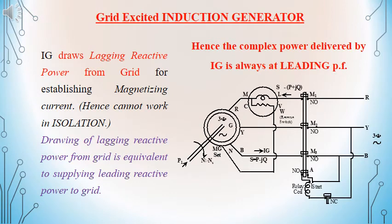The medium of energy conversion between the mechanical energy and electrical energy is a magnetizing system. In order to have the magnetizing current, there should be a lagging power that is drawn from the supply system or from the grid for an induction generator. Drawing a lagging reactive power from the grid is equivalent to supplying a leading reactive power to the grid. Because of the same, the grid excited or separately excited induction generator will always be operating at a leading power factor.